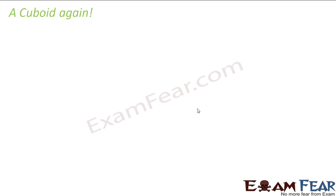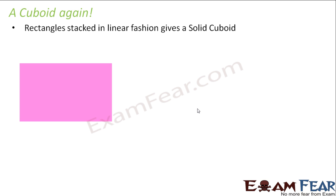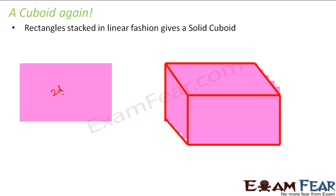So let us observe a cuboid again but this time we will not make use of squares. We will make use of rectangles. Now can we make cuboid using rectangles? Yes we can. So in this case you take a rectangle. A rectangle as such is a two dimensional figure. Now when you stack many rectangles one above another what happens? The same thing. This time also you get a cuboid and this also is a solid cuboid.